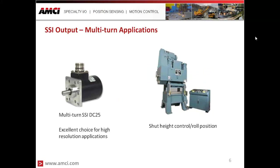For multi-turn applications, we have our multi-turn DC25. SSI is an excellent choice for high-resolution applications such as metal forming, where we need to monitor shut height — the distance between dies as the press makes a stroke — a very high-precision application. In a steel mill or paper mill, they have to position rolls for roll thickness, and we would use an SSI encoder there because those adjustments are typically done using lead screw arrangements. You can put the SSI encoder on those lead screws to monitor the adjustments.